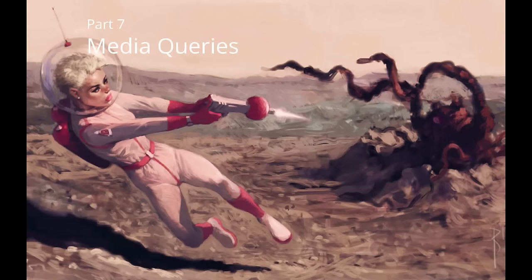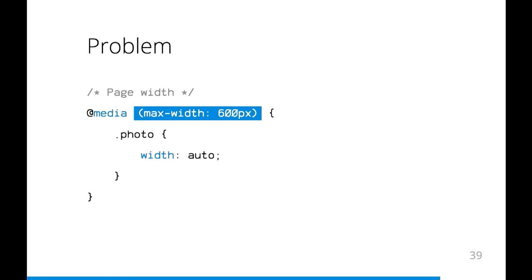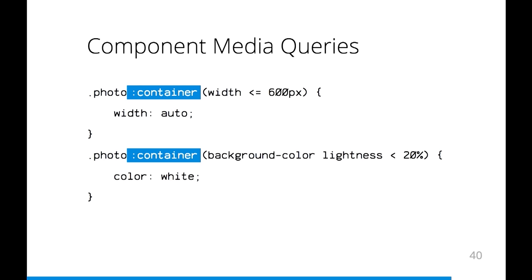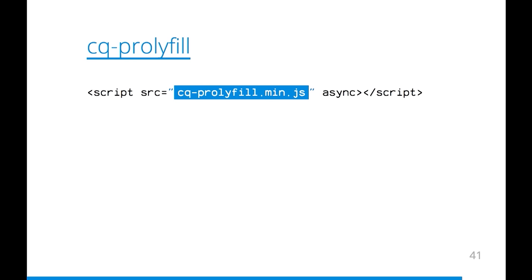Last but not least: media queries. The problem is that the width in a media query is the page width, not the component container width. What if you have the same component at two different sizes on one page — how do you control them? We need component-based media queries. We have a solution — it's not for everyone, but it's very interesting. It's called container queries — component-based media queries where you can use the component container width, or even the container background color. For example, on a dark background it will use white text; on a white background it will use black text. It's not purely a CSS plugin — it also requires JavaScript — but you should definitely look into it. It's a really new idea.